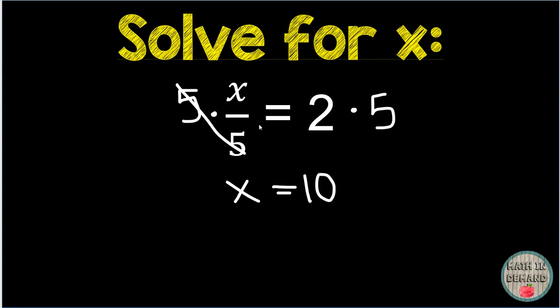I will check my work. x divided by 5, x was 10. So I am going to put 10 divided by 5 equals 2. Well, 10 divided by 5 is 2. That is a correct statement. Therefore, it is correct.